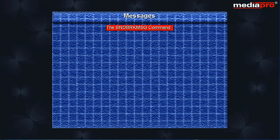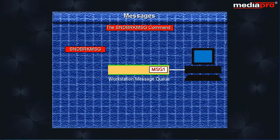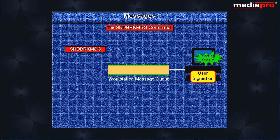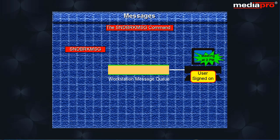The send break message command can be used to send messages to workstation message queues only. The user at the workstation will be interrupted and the message displayed on the screen. You can send a message to a single workstation message queue or to all the workstation message queues. If a user is signed on at the workstation, the message is displayed. If a user is not signed on, the message is held on the message queue and displayed automatically as soon as the user signs on to the workstation.